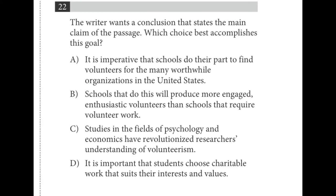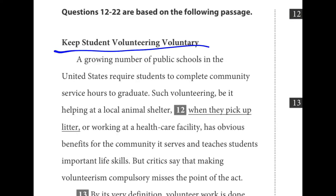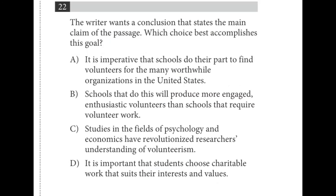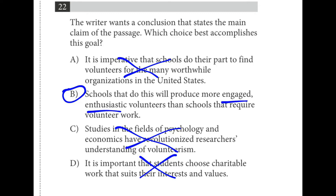For number twenty-two, we had to read the whole passage. The main claim is about whether volunteering should be mandatory or just encouraged. A doesn't fit. 'Schools can do their part' doesn't even mention mandatory. C doesn't address the main point — it would be a supporting argument for one side. D is a sub-point. B is the best choice: schools that get rid of mandatory requirements will have more engaged and enthusiastic volunteers.